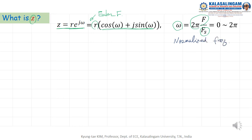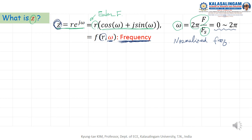Omega ranges from 0 to 2 pi. Z is a function of R and omega. Omega means frequency. Therefore, Z represents frequency components. Sometimes we call it the Z domain, otherwise we also call it the frequency domain — they are the same.